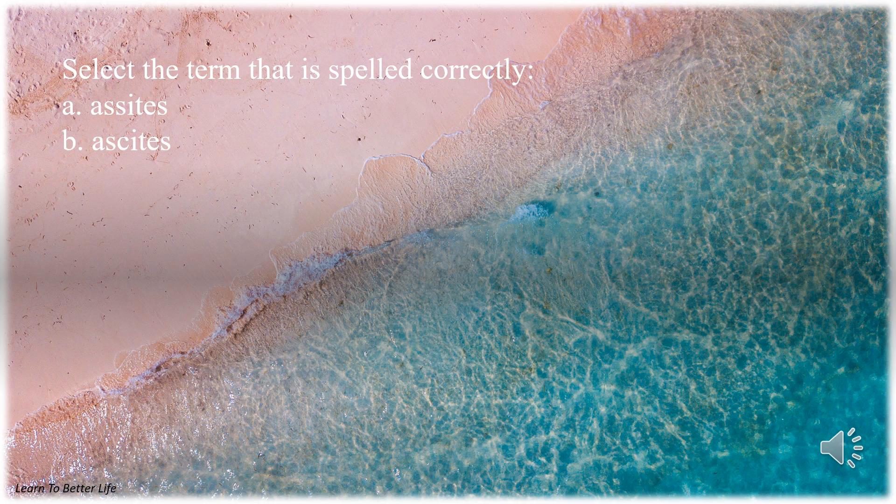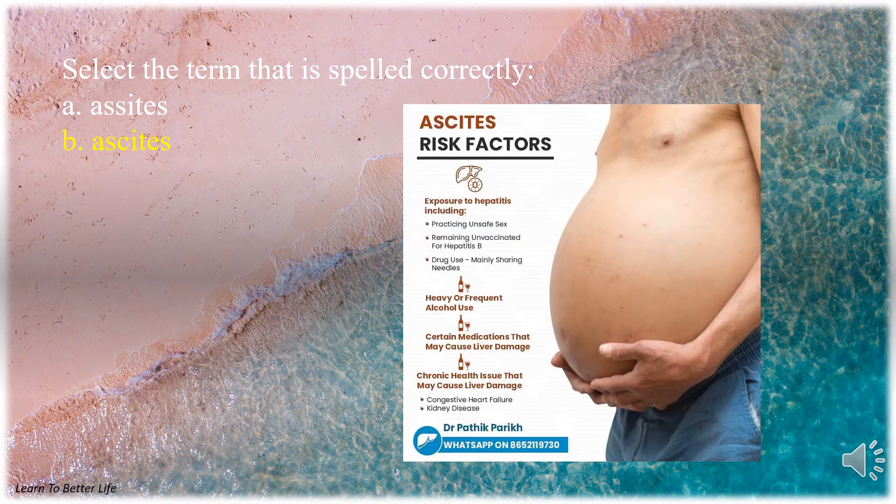Select the term that is spelled correctly. A. Ascites with S. B. Ascites with C. The answer is B. Ascites with C.